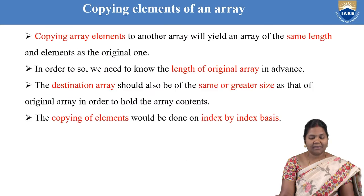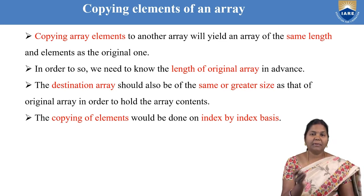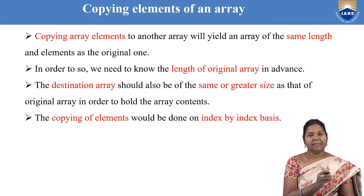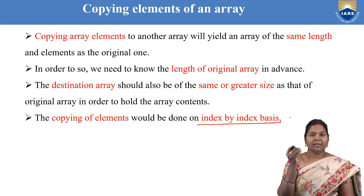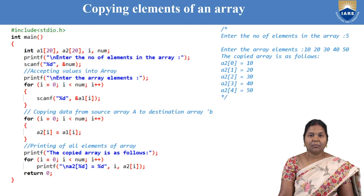The next operation is copying the elements of an array. Copying creates a duplicate array — if you copy an array of the same length to another array, you are creating a duplicate of the original. To copy, you first find the length of the array. The destination array should be at least the same length or greater so that all elements of the original array fit. Copying is done index by index — the 0th index element of the first array is stored into the 0th index of the second array.